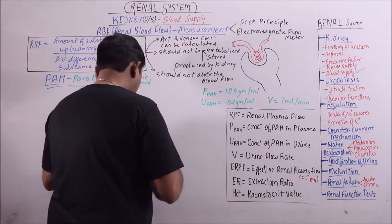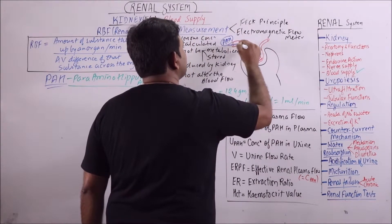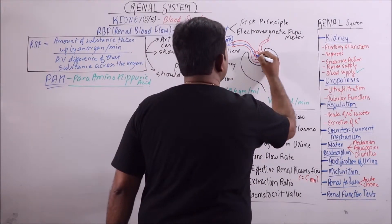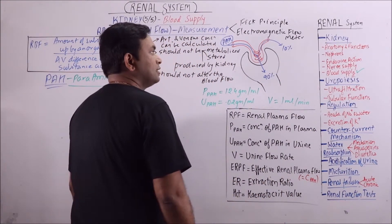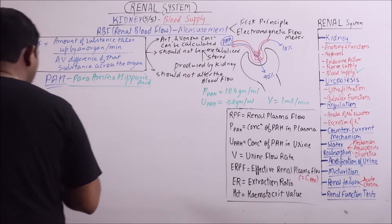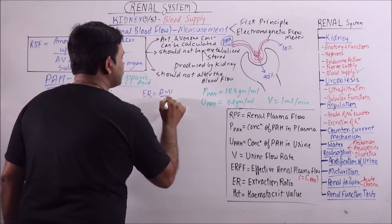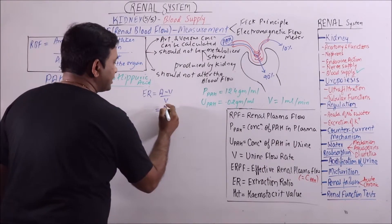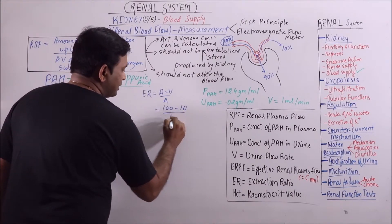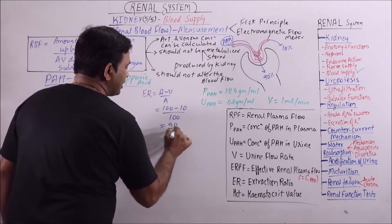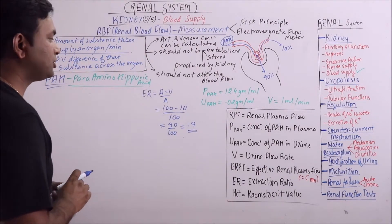One important point which we should know: when PAH enters the renal circulation, 90% of it is filtered while 10% enters the venous side. This means that the extraction ratio, which is (A-V)/A, if we take arterial concentration to be 100, then venous will be 10. So that is 90 by 100, which comes out to be 0.9. So extraction ratio for PAH is 0.9.